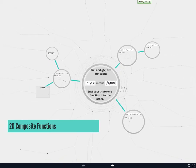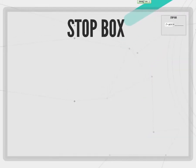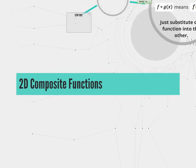2D is composite functions. Notes are pretty short today, so plenty of time for questions and time to work. And I do believe you guys have seen this stuff before. Don't forget to jot down a stop box. We're going to come back to that stop box at the end. And again, composite functions.